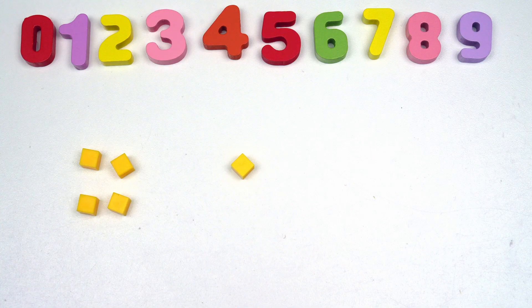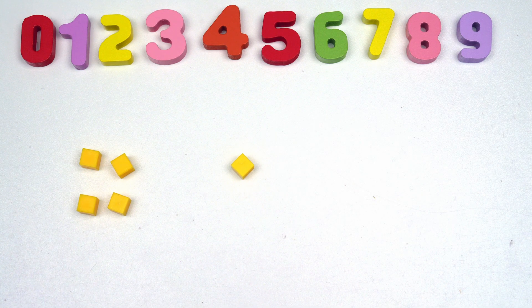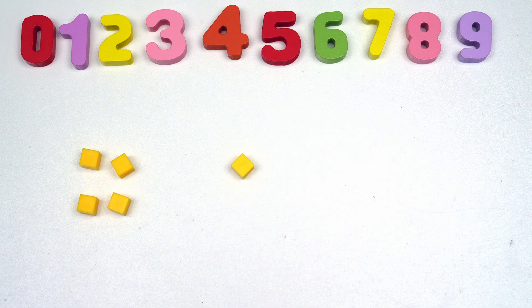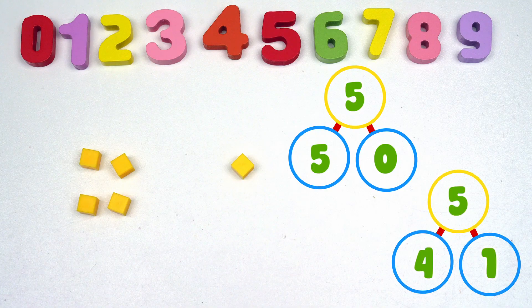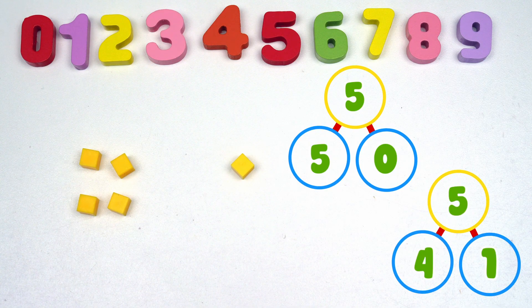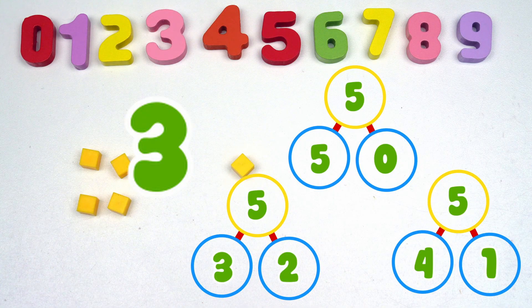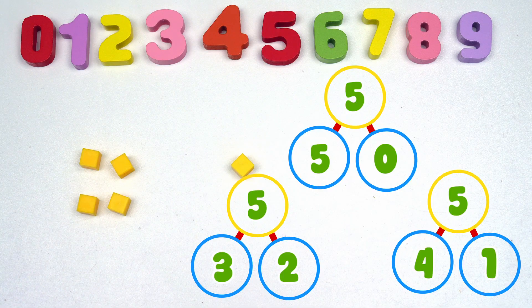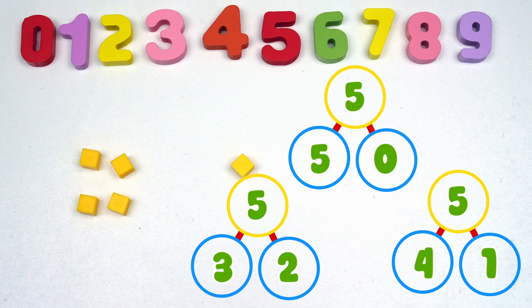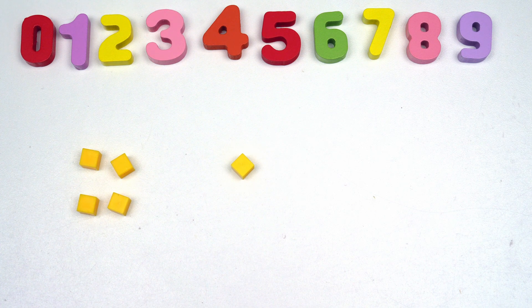So five has how many number bonds? Let's see. Zero and five, one and four, and two and three. The number five has three number bonds. All of these pairs are number bonds for five. They're different parts that come together to make the same whole number.